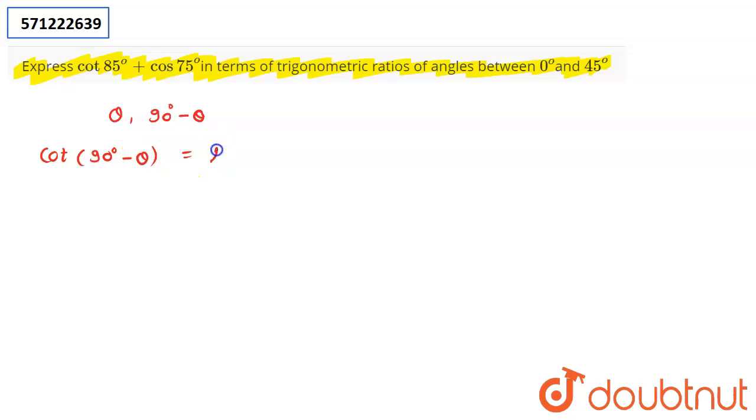And the second part that you have to use is cos of 90° minus θ is equal to sin θ. These are the two formulas that you're going to use in this particular scenario for simplifying this given expression.